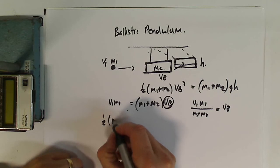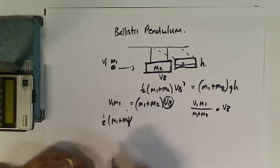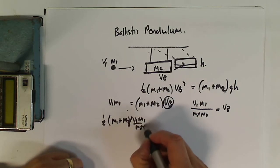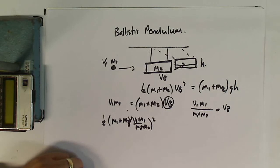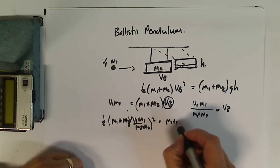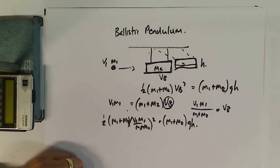And go: one half times (m1 plus m2) times [v1 m1 over (m1 plus m2)] squared is equal to (m1 plus m2) times gh. And if we do the algebra, we're going to come out with v1.